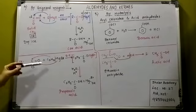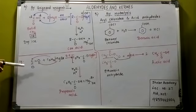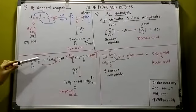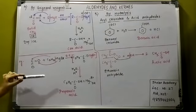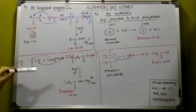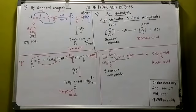R is equal to C2H5 over here, and the number of carbon atoms—kitne aayenge product mein? 2 plus 1 equal to 3. That is the method of preparation of propanoic acid.